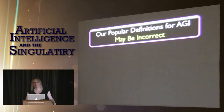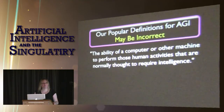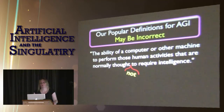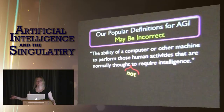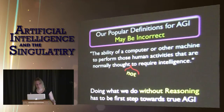Our popular definitions for AGI may be incorrect. The common definition is the ability of a machine to perform those human activities normally thought to require intelligence. But that means playing chess and solving integrals are AI problems — and computers have been doing those quite nicely for years. I claim the opposite: a better definition is that artificial general intelligence is the ability of a computer to perform those human activities normally thought not to require intelligence — things like understanding language, generating language, sequencing your leg muscles as you walk, knowing how to enjoy a symphony. Doing what we do without reasoning has to be the first step towards true AGI.